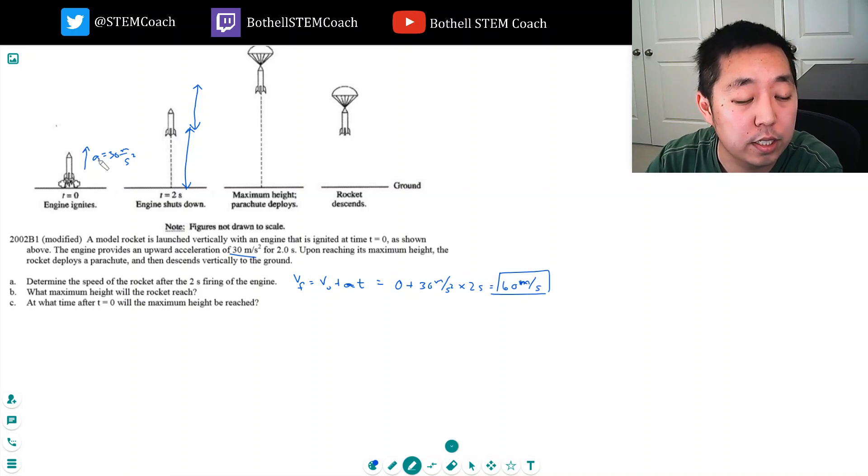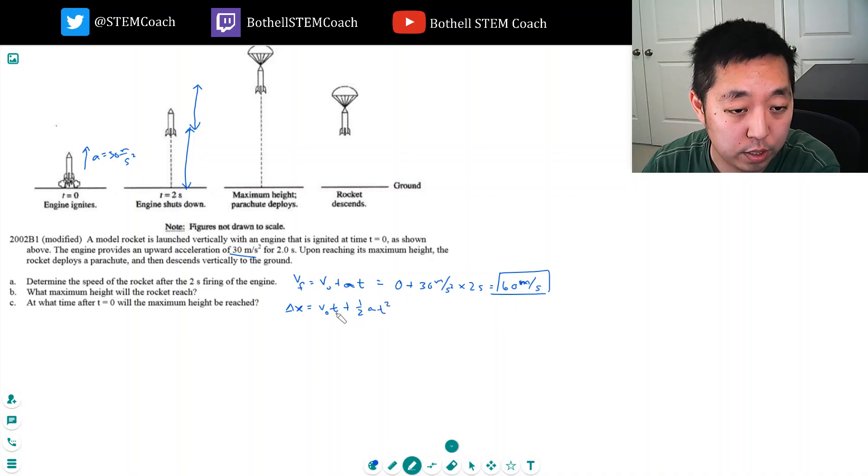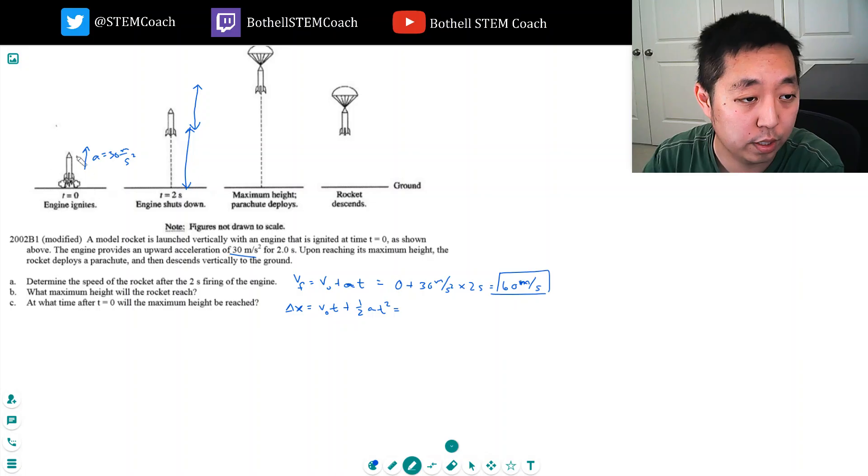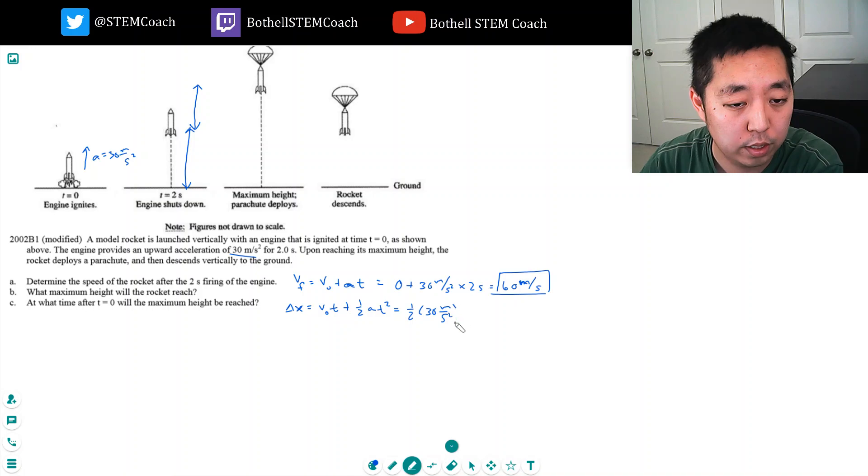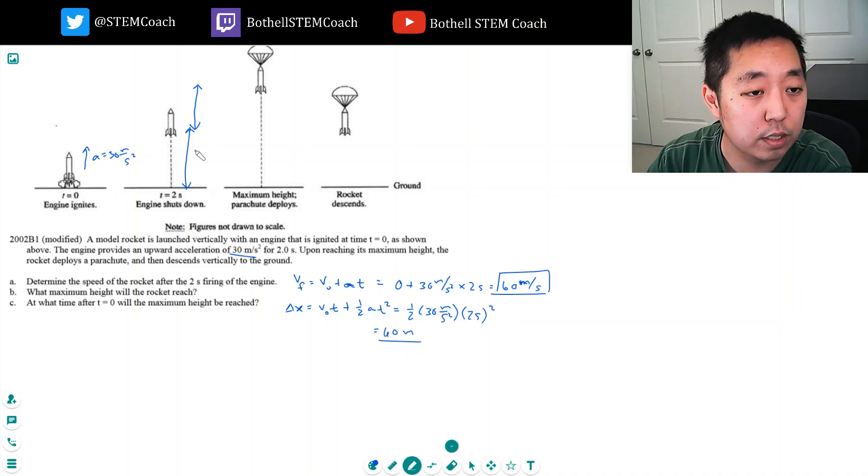This initial height is pretty easy. Under this constant acceleration, the change in position is going to be V0t plus 1/2 at squared. And I picked this equation because I know the time, I know the initial velocity, I know acceleration. His initial velocity is zero again, between this time window, this launching, he starts off on the ground, no velocity. So it's just 1/2, 30 meters per second squared, and this lasts for 2 seconds. So that's 15 times 4, that's 60 meters. So 60 meters is how far this here is. That's just firing the engine.